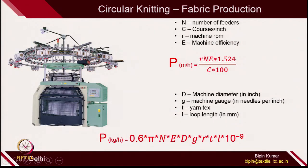Welcome participants. We are moving to lecture number 3. This is related to production, but mostly on flat knitting machines. In the last lecture, you have seen the production on circular knitting machines. We derived 2 formulas: production in meter per hour and production in kg per hour. You don't have to remember these formulas — if you know the steps, you can simply derive them. These are very useful in finding the production capacity of the machine, if you know certain variables.